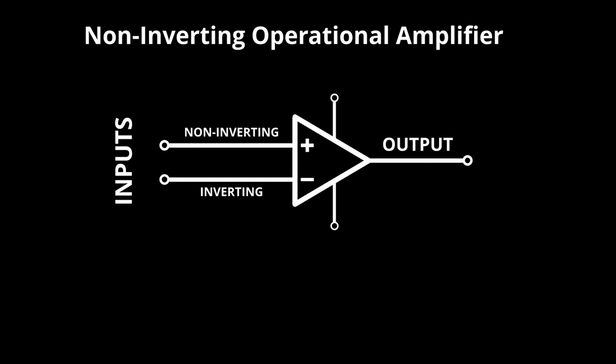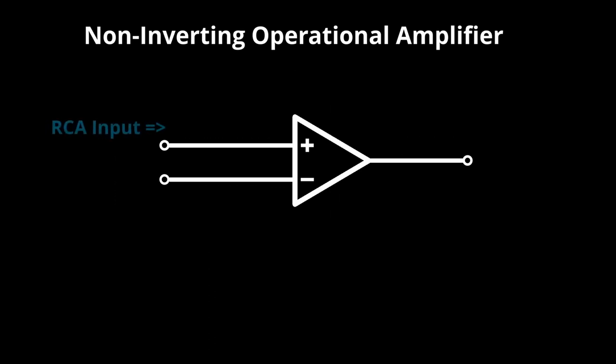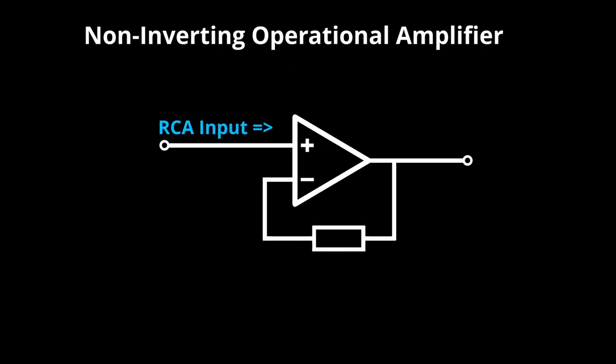An op amp has two inputs, the positive, also called the non-inverting input, and the negative, or inverting input. For a non-inverting circuit, the input audio signal is connected to the non-inverting pin, and the output of the amplifier is tied back to the inverting pin through a resistor, which we'll refer to as R1.